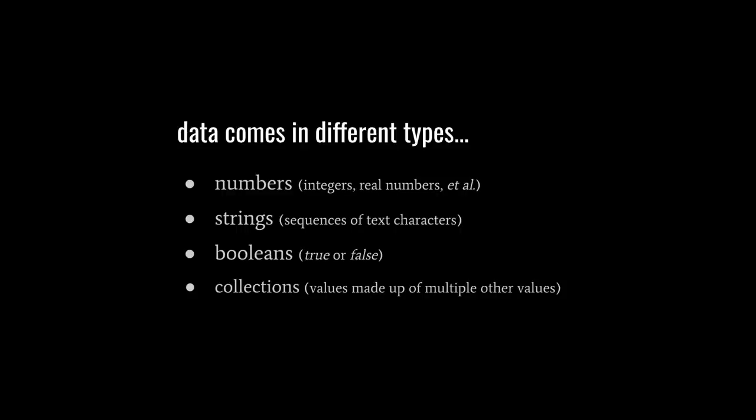Numbers require no explanation, but a string is a piece of text. It's a sequence of text characters, and a boolean is a value that's simply just true or false, which are used to represent all sorts of yes-no pieces of data. Like, for example, is it currently sunny outside? Yes or no? True or false?